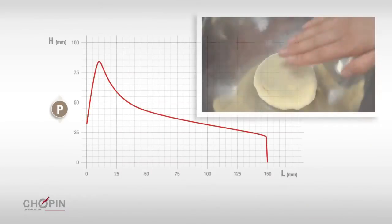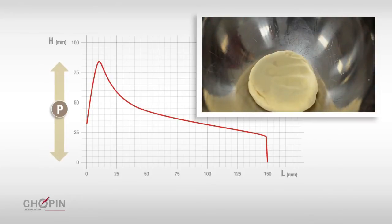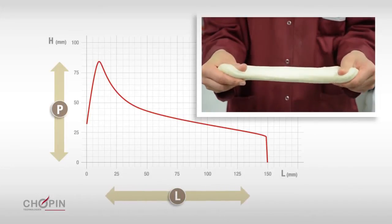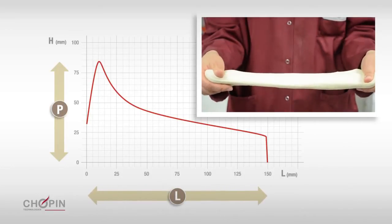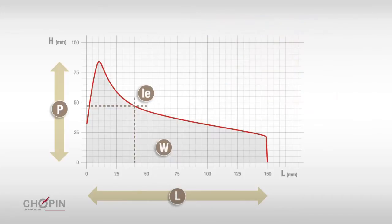P value represents dough tenacity, in other words its capacity to resist deformation. L value corresponds to the maximum amount of air the bubble is able to contain and represents dough extensibility. IE value corresponds to the elasticity index. And finally, W value indicates dough baking strength.